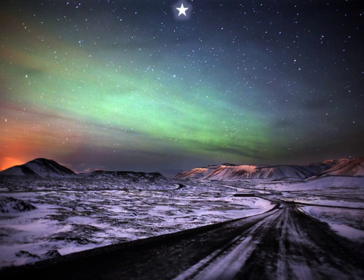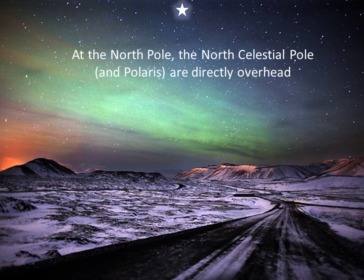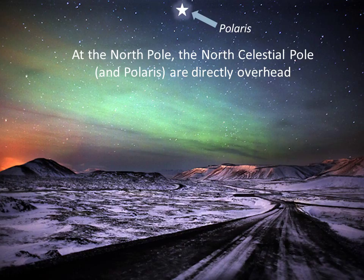Let's take an imaginary visit to the north pole. From the north pole, the point directly over our heads on the celestial sphere marks the north celestial pole. There is also a star very near to the north celestial pole — it is our north star, and its official name is Polaris. The north star isn't the brightest star in the sky; it's simply a star that happens to be close to the north celestial pole.